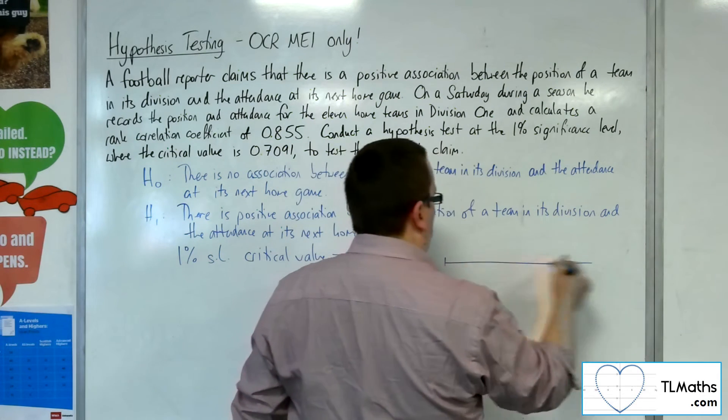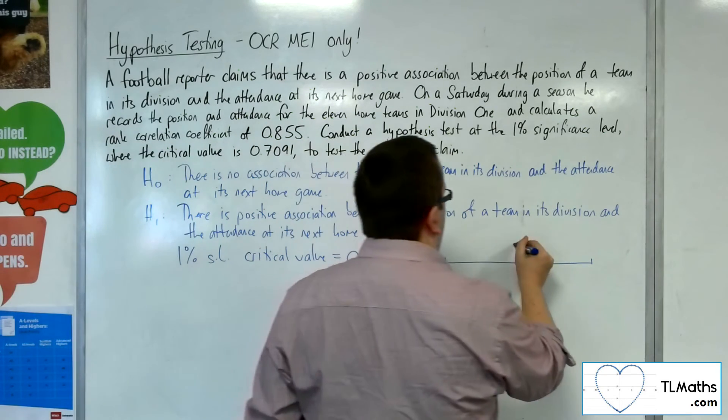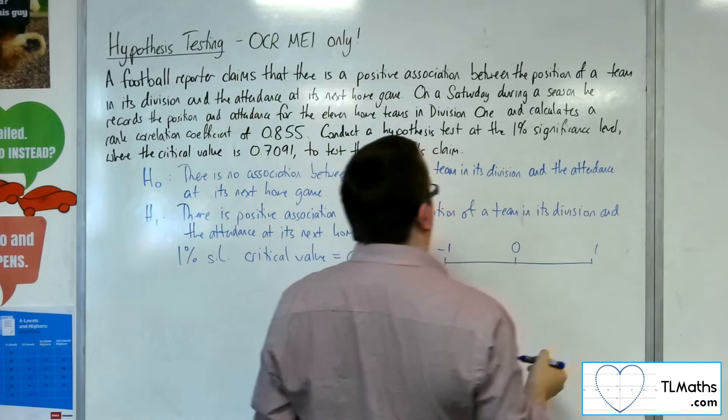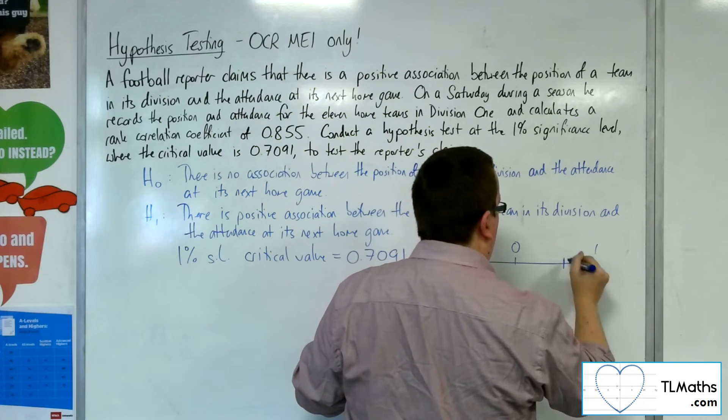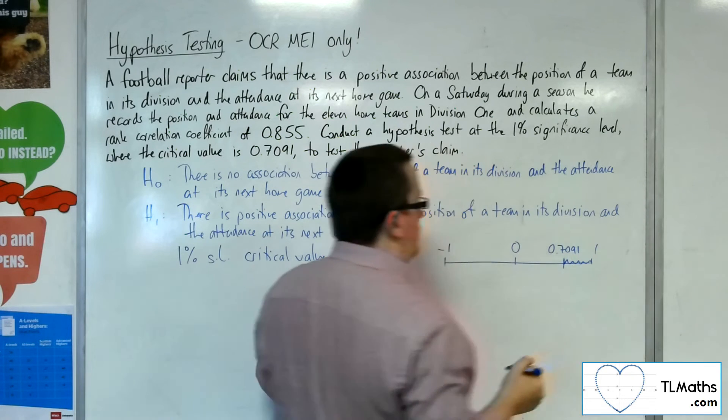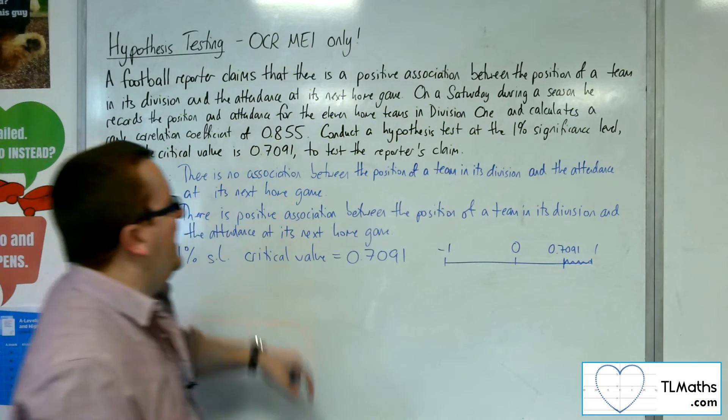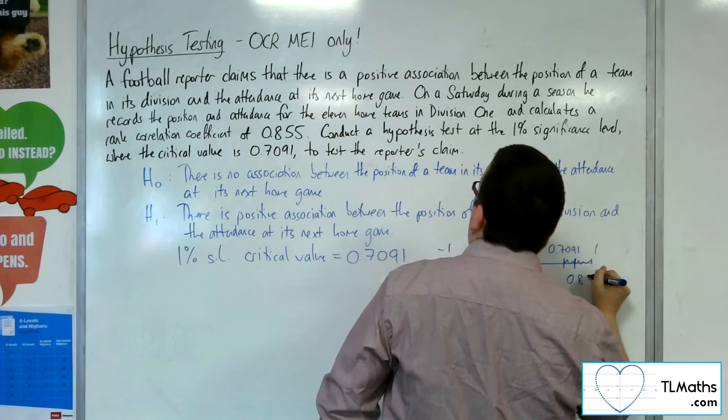So, if we draw our number line like we did for the product moment correlation coefficient, here is 0, here is minus 1, here is 1. Well, the 0.7091 is about there. That is my critical region. The 0.855 is clearly in there.